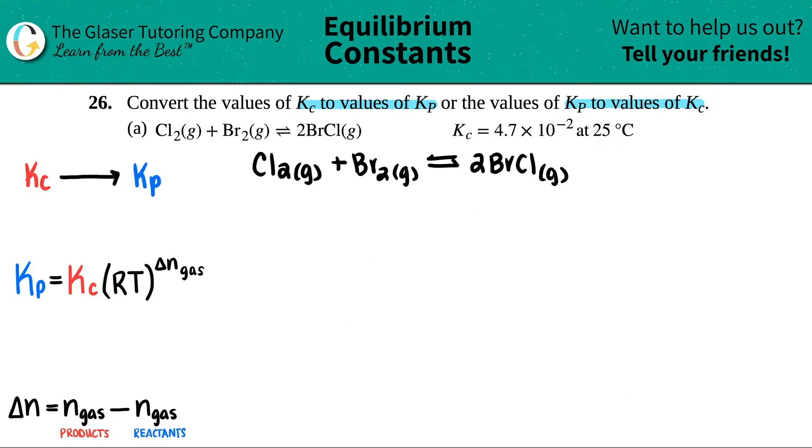So let's start with what we're given. We have the Kc value, so I know what this is: 4.7 times 10 to the negative 2. We're trying to solve for Kp, so I'll just leave it like this. But now I should know what RT and the delta n gas is.